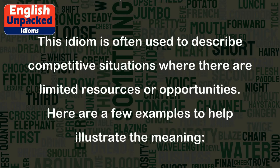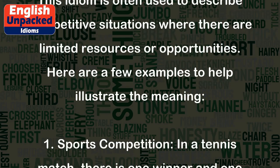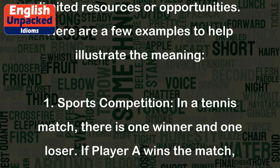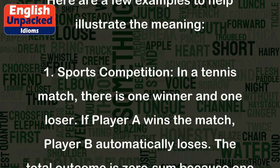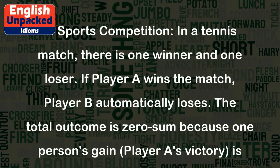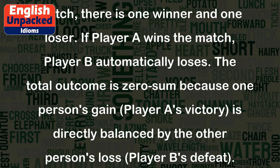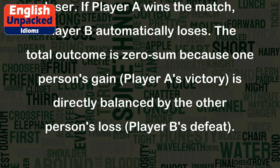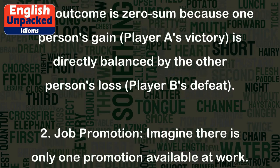Here are a few examples to help illustrate the meaning. 1. Sports Competition: In a tennis match, there is one winner and one loser. If player A wins the match, player B automatically loses. The total outcome is zero-sum because one person's gain, player A's victory, is directly balanced by the other person's loss, player B's defeat.